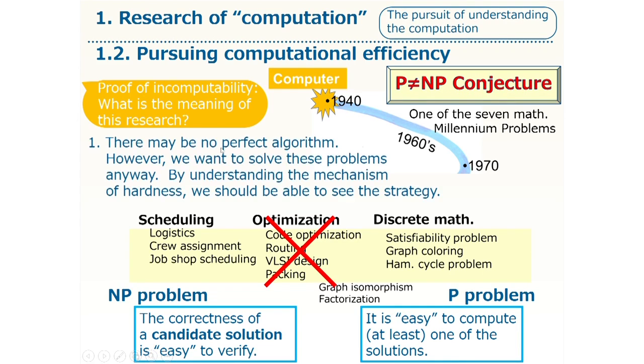First, people want to solve these problems. They are problems that came up in all aspects of our lives. For example, good scheduling is quite important in many situations in our society. Likewise, each of these problems has an important application, and we want to solve them anyway.